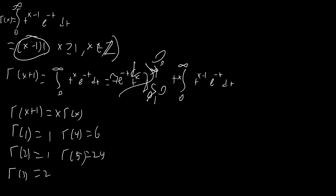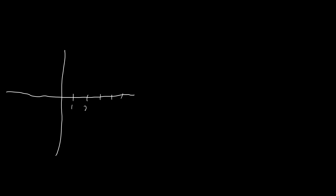Now I want to talk about how we can define the gamma function for numbers that aren't positive integers. What I'm drawing here is called the complex plane — a way to represent all complex numbers on a single plane. We have the imaginary axis and the real axis, with negative numbers on the left and negative imaginary numbers below, and using Cartesian coordinates we can represent any complex number we want.